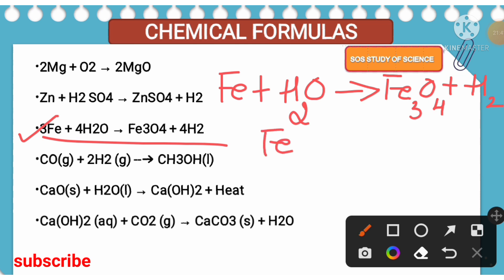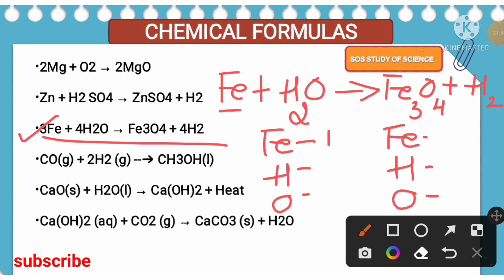In the reactant side there is iron, hydrogen, and also oxygen. Similarly, in the product side also there is iron, hydrogen, and also oxygen. Now it is time to write the number of atoms present in both reactant as well as in the product. There is only one atom of iron, two atoms of hydrogen, one atom of oxygen. When we look at the product, there are three atoms of iron, four atoms of oxygen, two atoms of hydrogen. Hydrogen is balanced now, so it is time to balance iron and also oxygen. You have to balance now in the reactant side, as the number of atoms are more in the product side.